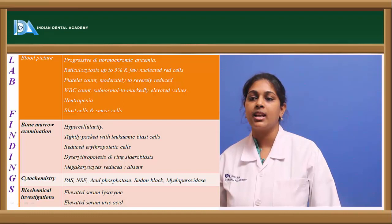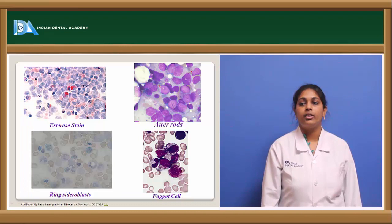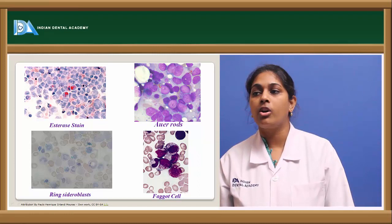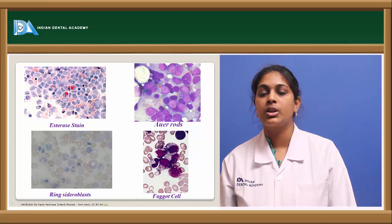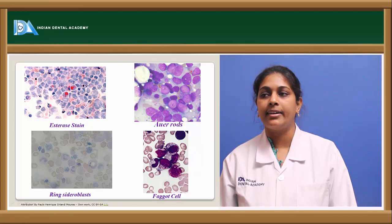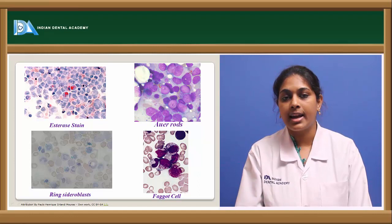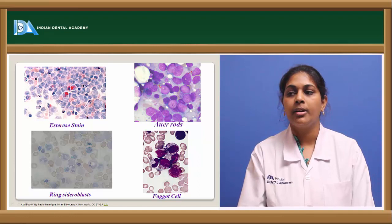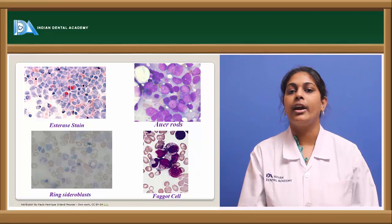Pictures show positive esterase staining in reddish color, Auer rods appearing as pale eosinophilic areas with cytoplasmic extensions, ring sideroblasts showing a central pale empty area, and a Faggot cell showing diffuse granulation throughout the entire cell.